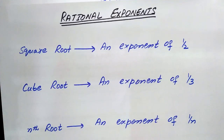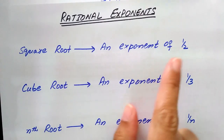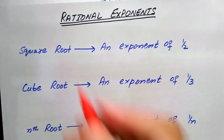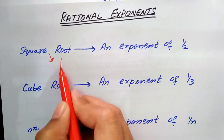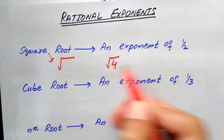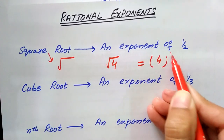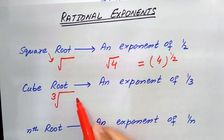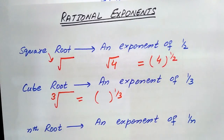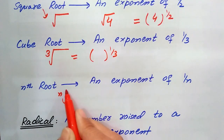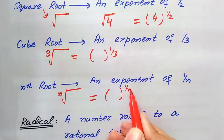In short, rational exponents: square root is an exponent of 1/2. For example, the square root of 4 equals 4 raised to power 1/2. Cube root is an exponent of 1/3. The nth root is an exponent of 1/n.